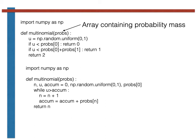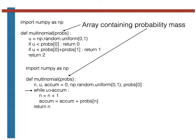The function shown here provides a better way of generating a multinomial random variable. Once again, the argument to the function is a vector containing the elements of the probability mass function for the random variable of interest. However, this vector of probability mass values can now have any length because we use a while loop inside the function. To understand why this while loop works, let's consider the segmented line once more. The function starts by generating a uniform continuous random variable between 0 and 1 called u, just as before.